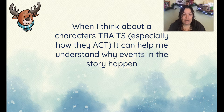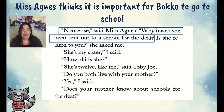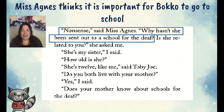When we think about character traits — and in this case, we're especially thinking about how the character acts — it can help us understand why events in the story happen. I can use character traits and actions to try to explain things about a character. For instance, if I said Miss Agnes thinks it's important for Boko to go to school, I could look for examples of how she acts and feels in the story to prove that she thinks that's important.